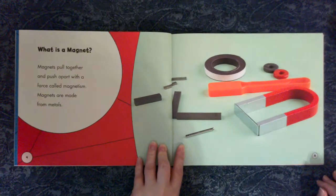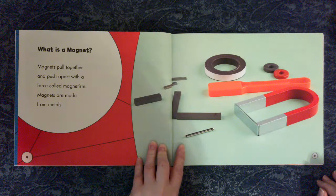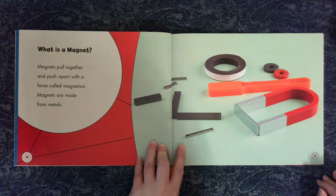What is a magnet? Magnets pull together and push apart with a force called magnetism. Magnets are made from metals.